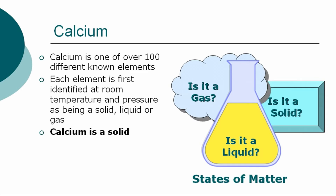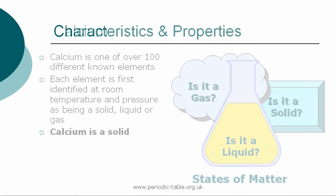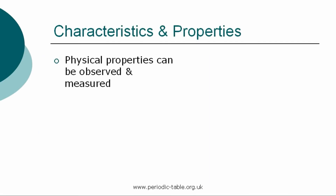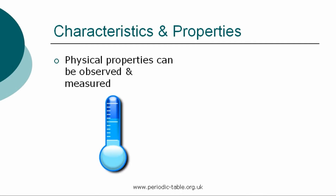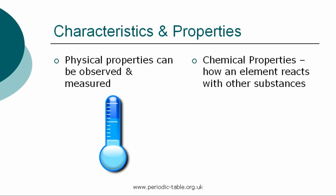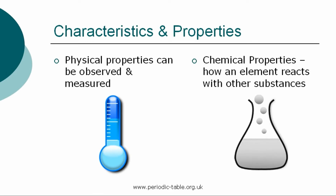Calcium is a solid at normal room temperature and pressure. Each element has physical properties that can be observed and measured, such as color, density, and odor. The chemical properties are the characteristics that determine how a substance will react with other substances, such as water or oxygen.